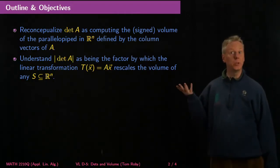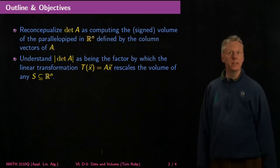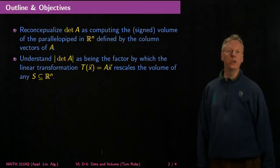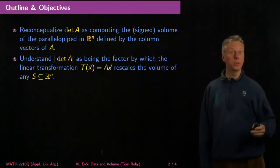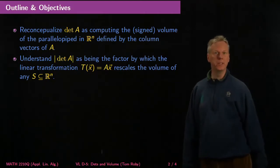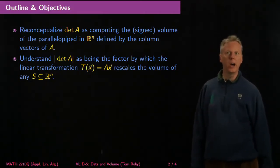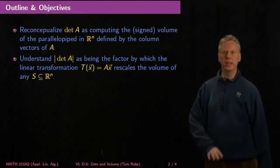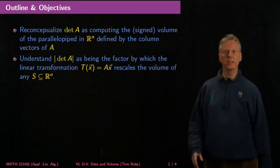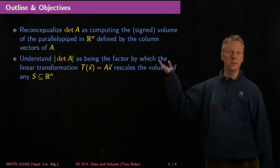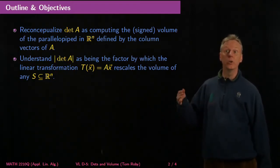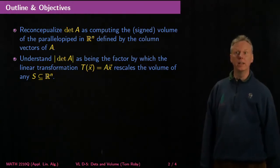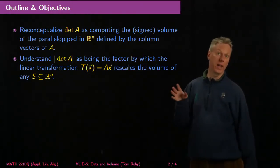We'd like to reconceptualize the determinant of A as computing a kind of signed volume of generalized parallelograms, or what we call parallelopipeds in R to the n, defined by the column vectors of A. And we'd like to understand the absolute value of the determinant as being the factor by which a linear transformation given by matrix A rescales the volume of any subset S of R to the n.